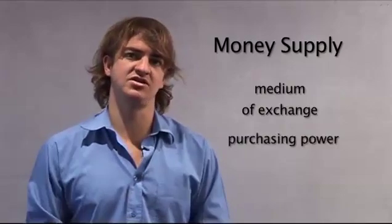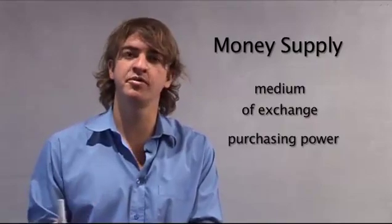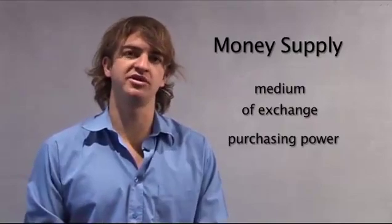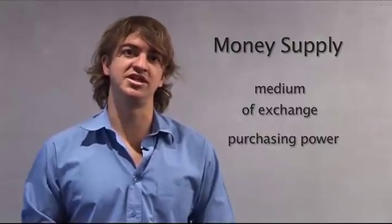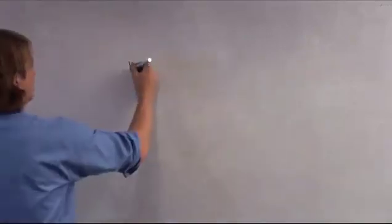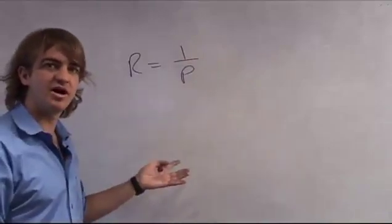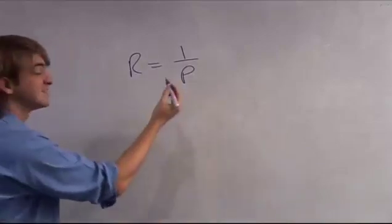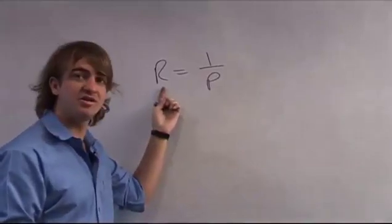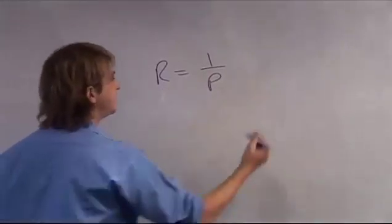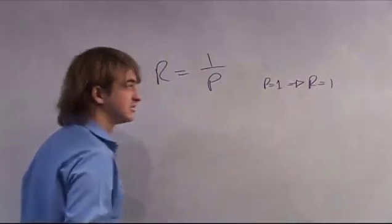Purchasing power does change according to inflation. If inflation increases — resulting from a slight increase in the money supply, demand-pull inflation, or cost-push inflation — your purchasing power decreases. You can view the purchasing power of your rand as: purchasing power = 1 divided by the price level (P). So if P is equal to 1, then the purchasing power of your money is equal to 1.